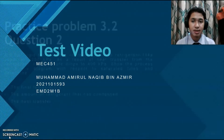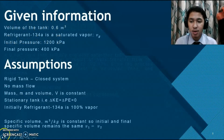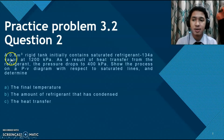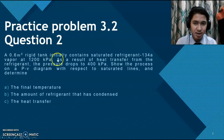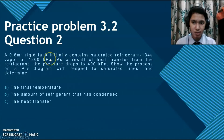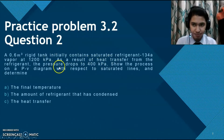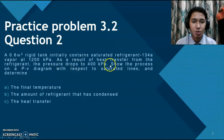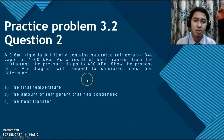My question comes from practice problem 3.2, question 2. The question states: a 0.6 meter cube rigid tank initially contains saturated refrigerant 134A vapor at 1200 kPa. As a result of heat transfer from the refrigerant, the pressure drops to 400 kPa. We will show the process on a PV diagram with respect to saturated lines.